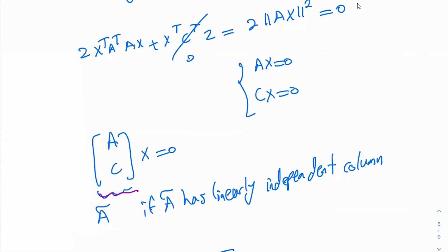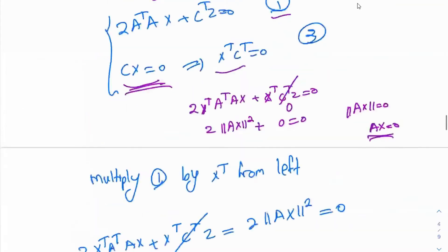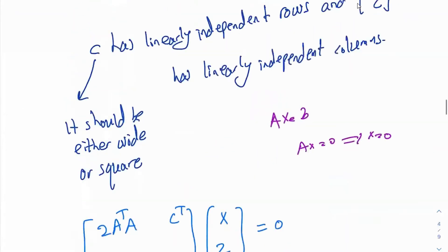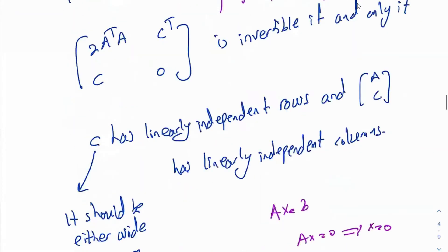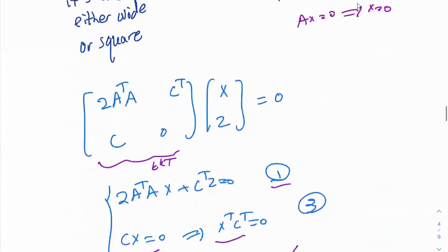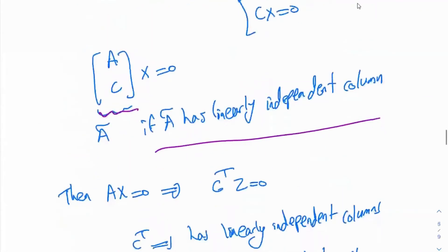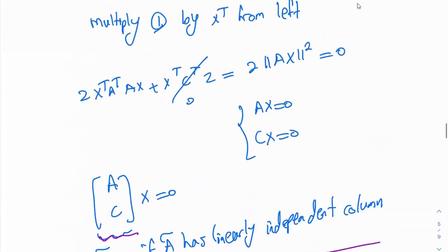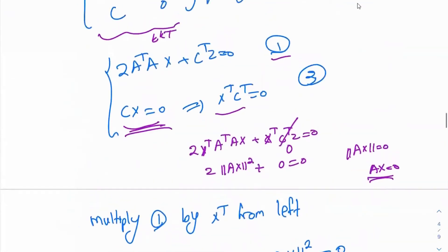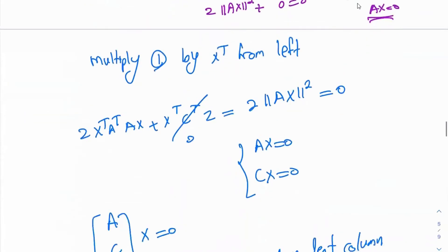If A-tilde has linearly independent columns — as we have seen in multi-objective least squares and also ordinary least squares. So that's the first condition. You prove that this stacked matrix should have linearly independent columns.